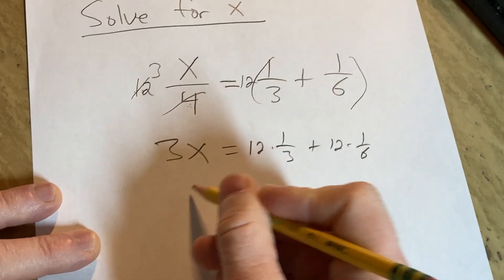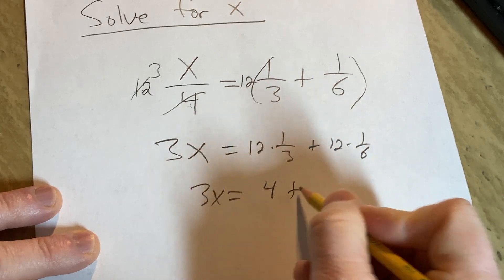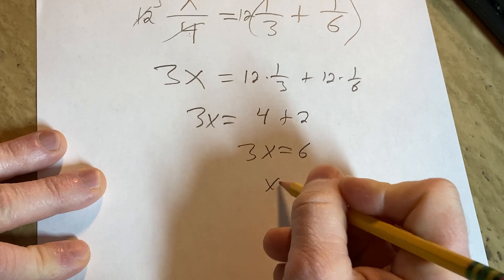And you can skip the steps here. 3 goes into 12 four times. That's 4. And that's going to be 2. So 3x is equal to 6. So x is equal to 2.